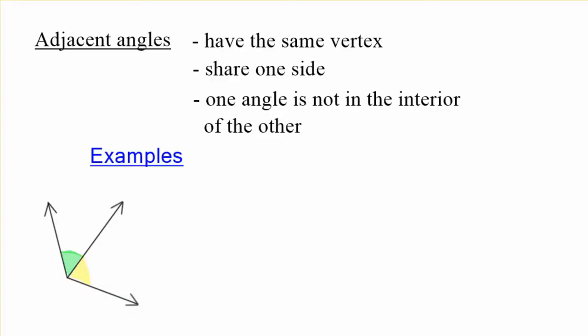Here's some examples. The first one, these two angles, the green and the yellow, they share the same vertex and they share one side.